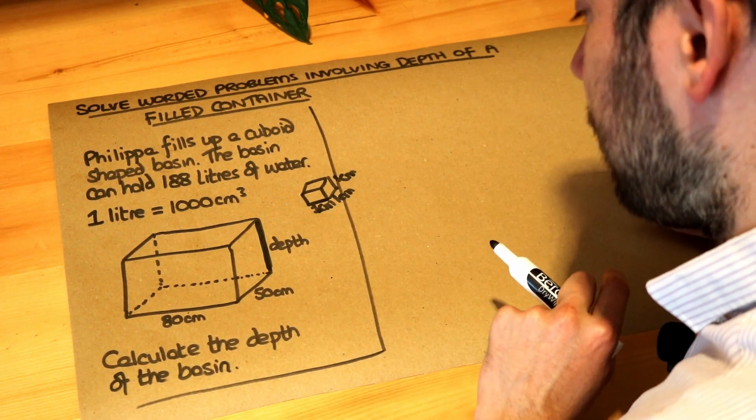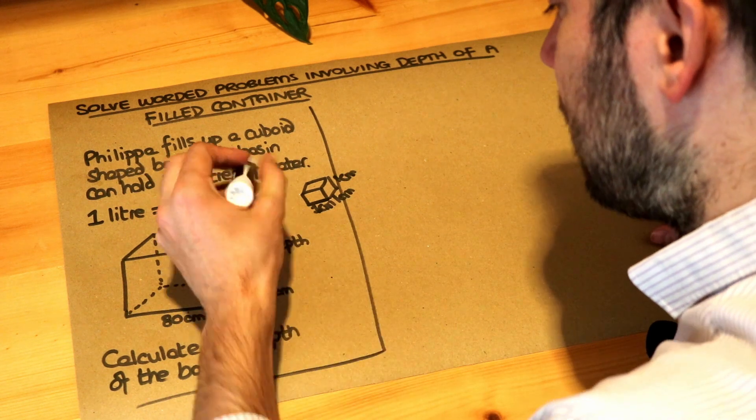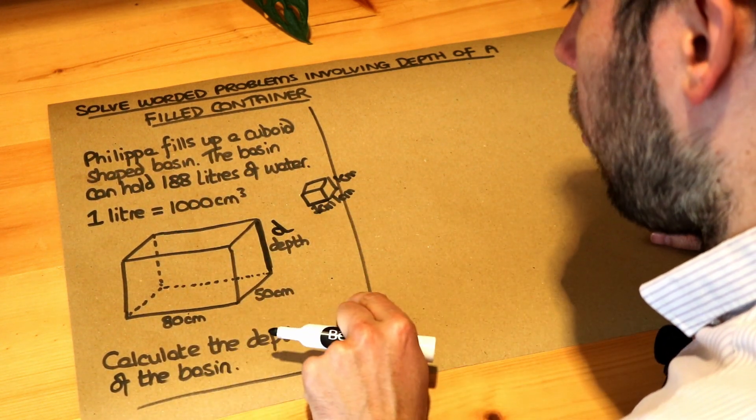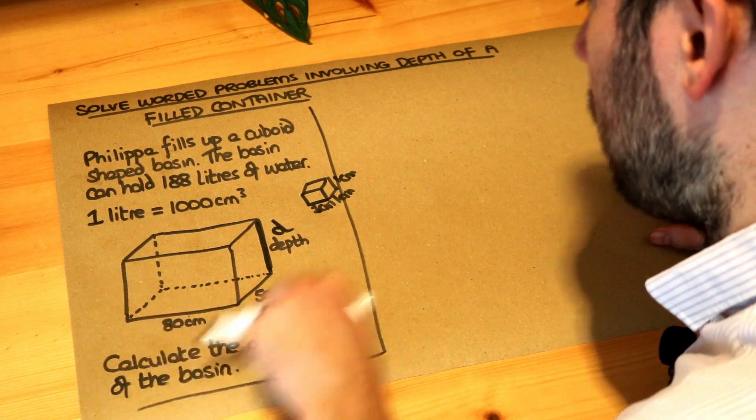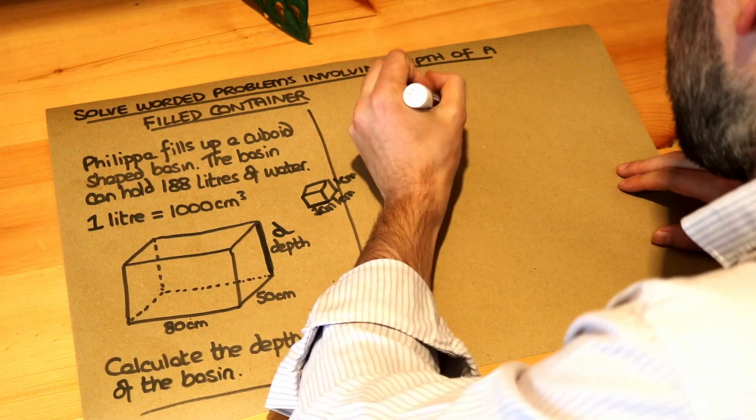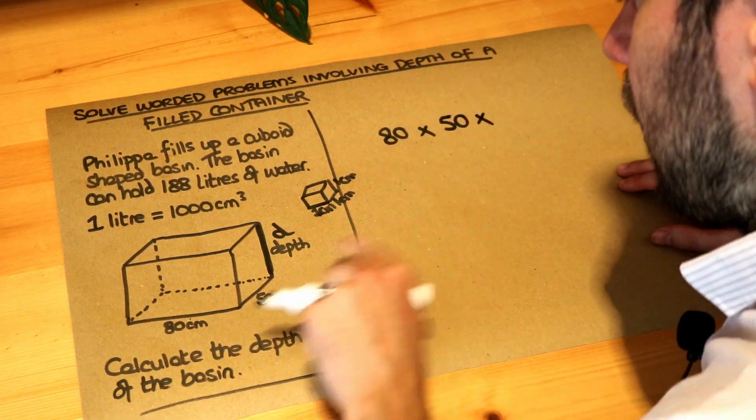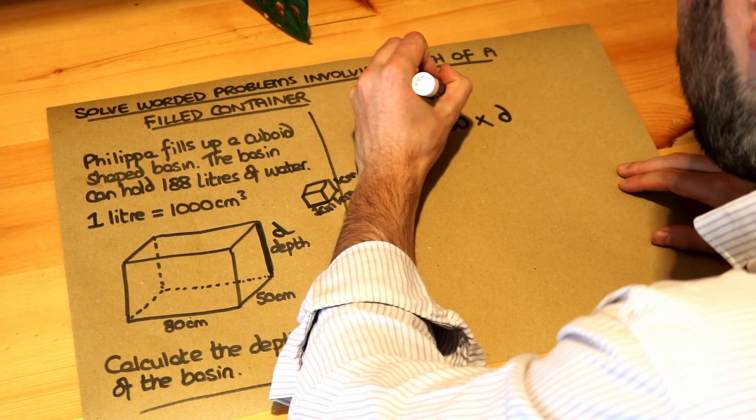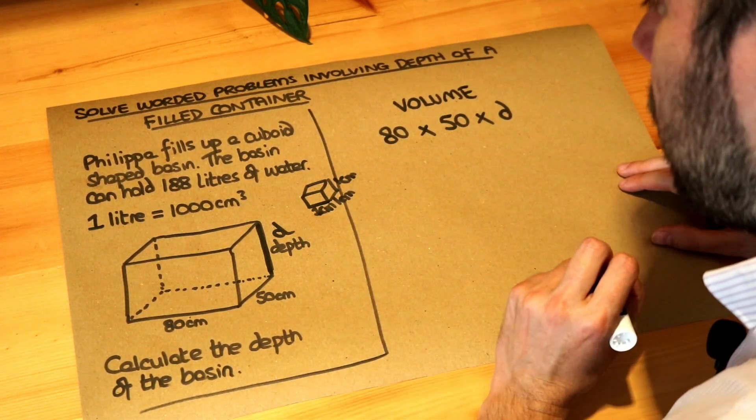So if we just call this depth d, I'm just going to use a variable depth d, the volume of this cuboid would be the 80 centimetres multiplied by the 50 multiplied by the depth. We're going to call that d. That would be the volume of water in the basin if it was filled.